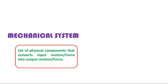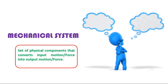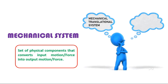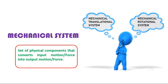For a mechanical system, we give the input in the form of force, torque, or motion, and the corresponding output is determined from the system. The mechanical system is broadly classified into two types: one is the mechanical translational system and the other is the mechanical rotational system.